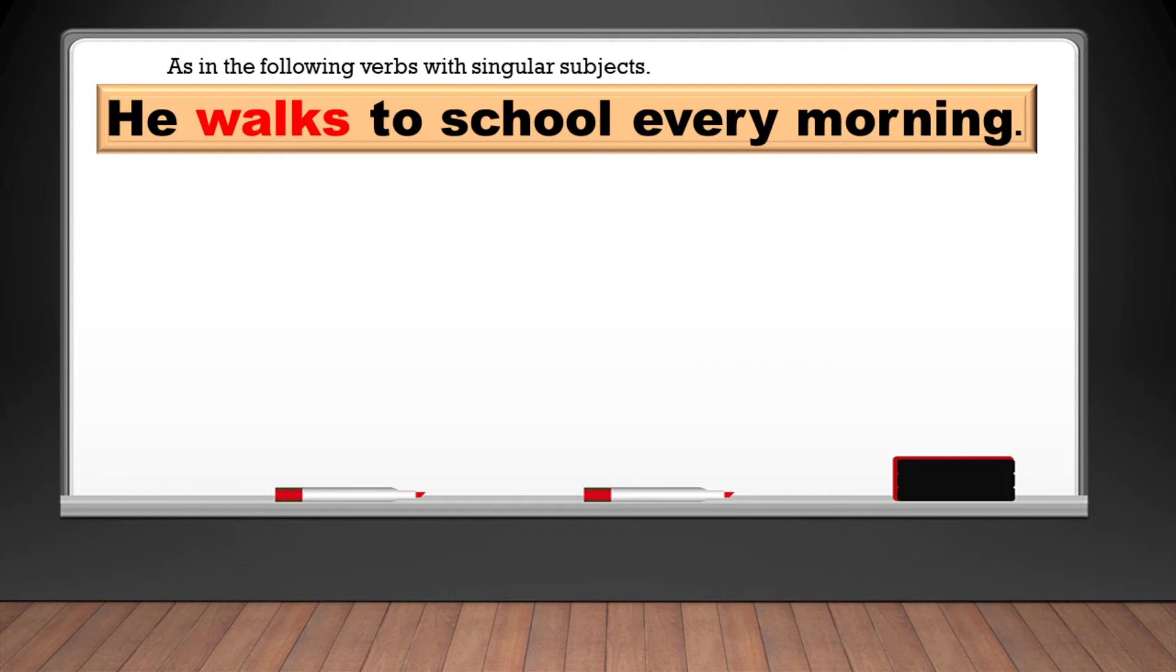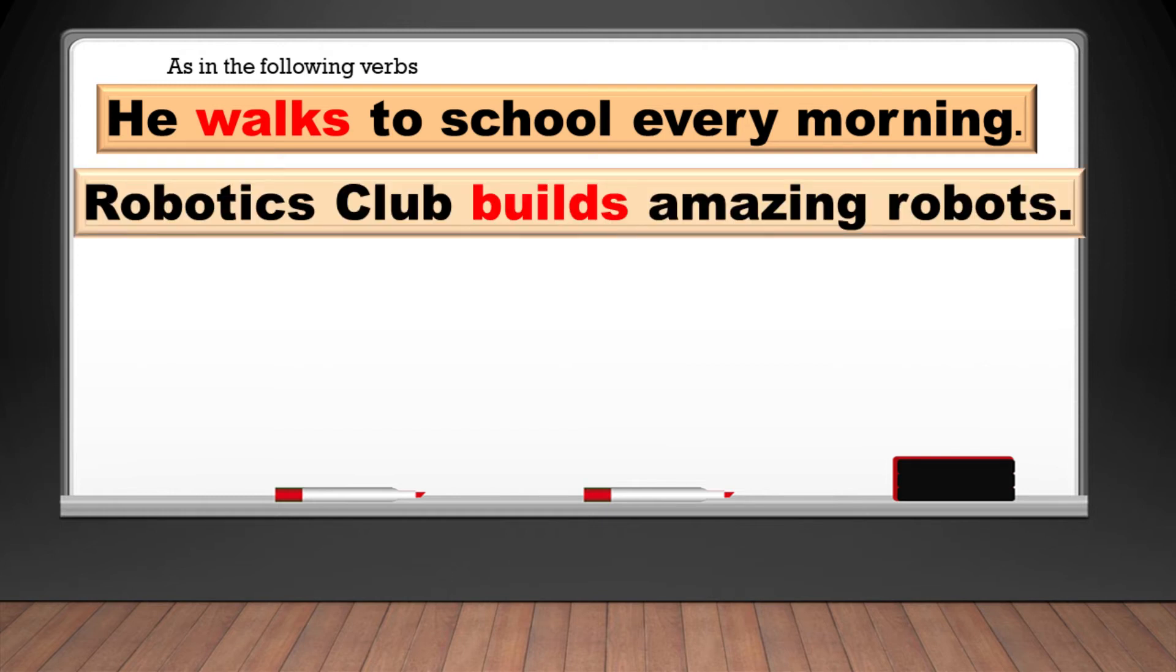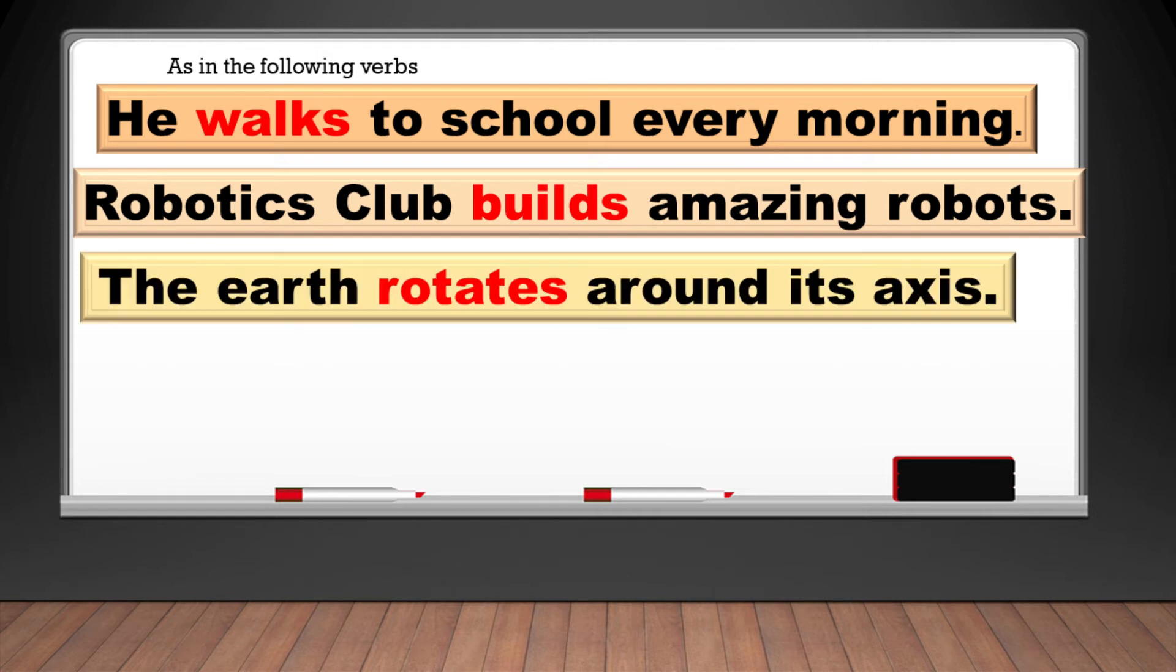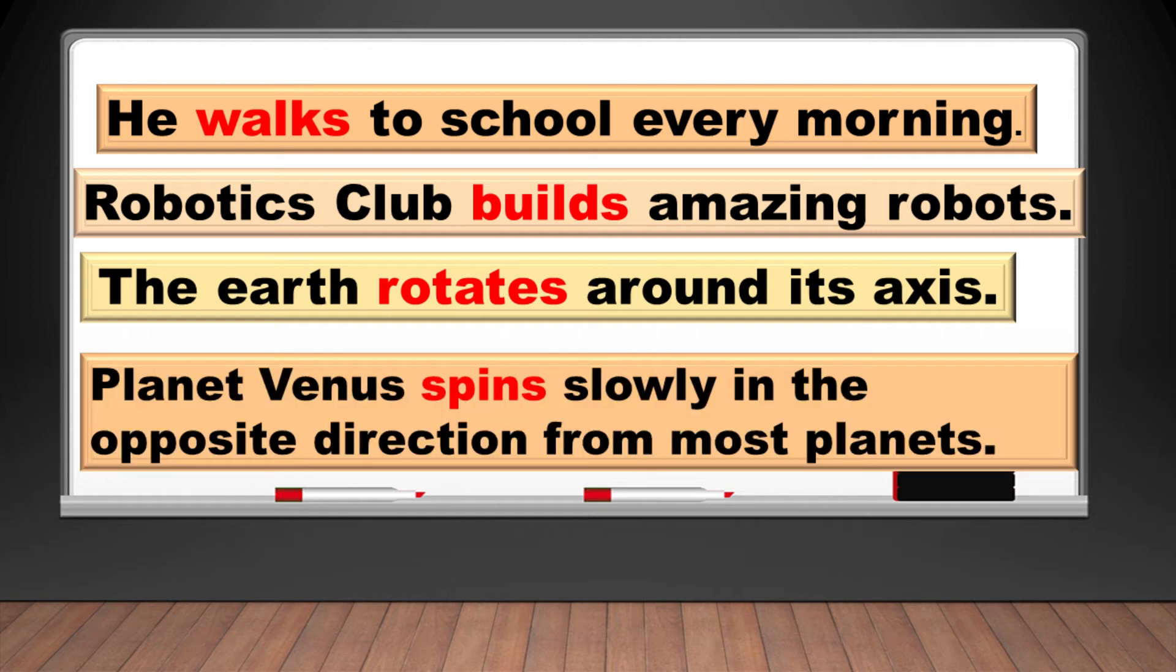One: He walks to school every morning. Two: Robotics club builds amazing robots. Three: The Earth rotates around its axis. Four: Planet Venus spins slowly in the opposite direction from most planets.